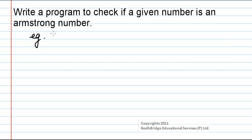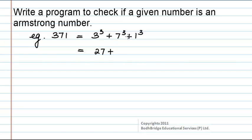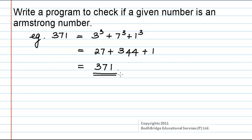For example, let us take the number 371. The sum of the cubes of its digits is 3 cubed plus 7 cubed plus 1 cubed, which equals 27 plus 343 plus 1. If we add all of these we again get 371, so the sum of the cubes of its digits is equal to the number itself. Therefore, 371 is an Armstrong number.